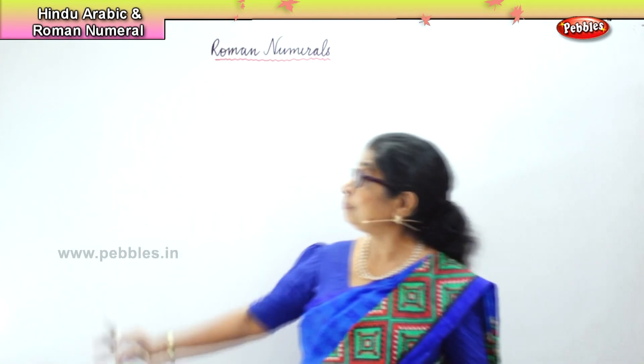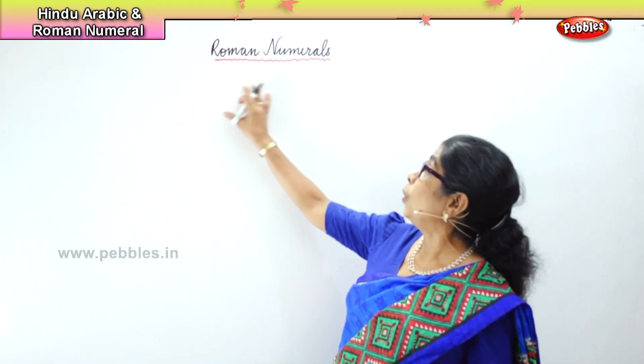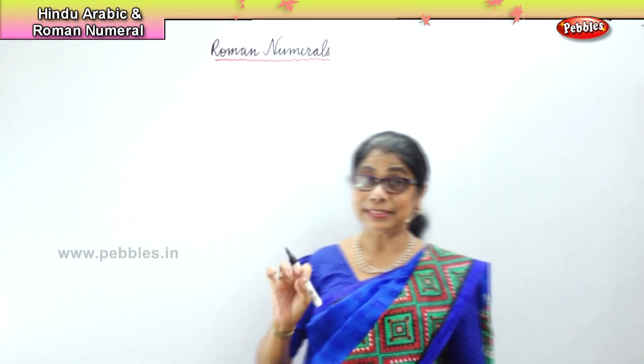Hi children. Roman numerals. We learned the seven main characters. We know how to write and recognize one, five, ten, then we can recognize fifty, hundred, five hundred, one thousand.